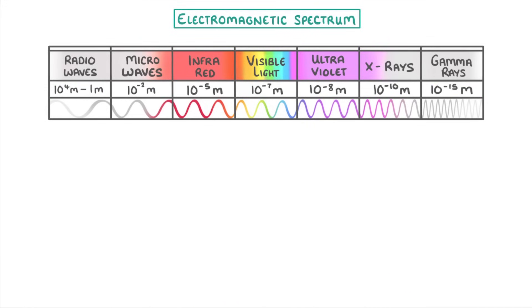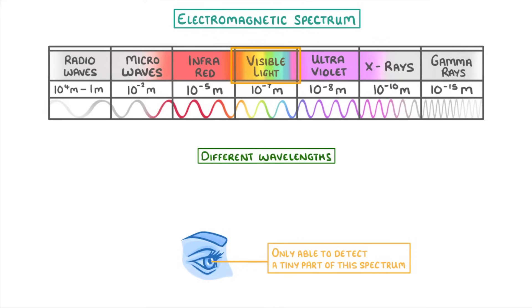As human beings though, our eyes are only able to detect a tiny part of the spectrum, which we call visible light. And the different wavelengths within this region are what give us all of the different colors that we can see.